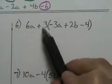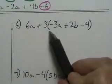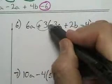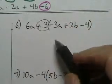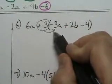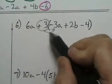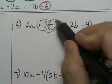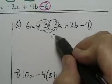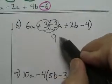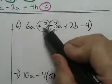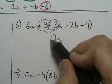Number six, we're faced with the same thing. We need to do distributive property. We have a positive three, and we're going to multiply by each one here. So three times negative three — three times three is nine, so it's 9a, and there's one negative, so the answer is negative.